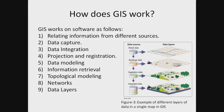Finally, it connects different network nodes representing data and produces different data layers, combining them to show a result. Figure 3 shows an example of different data layers combined in a single map in GIS.